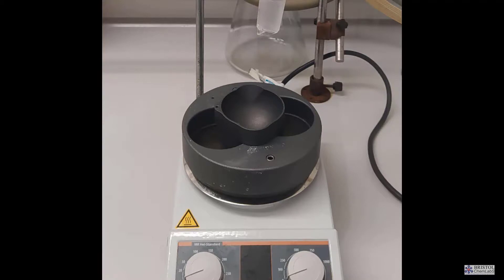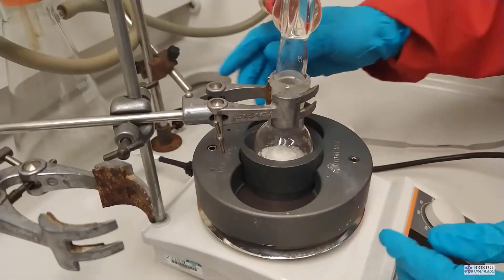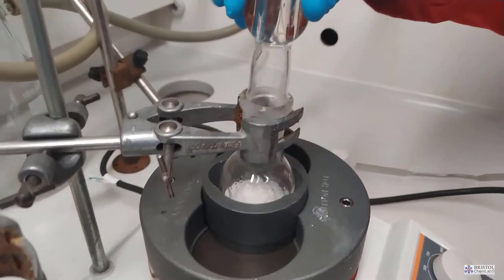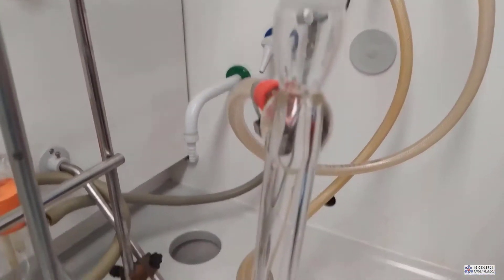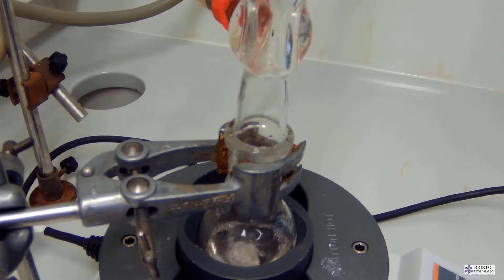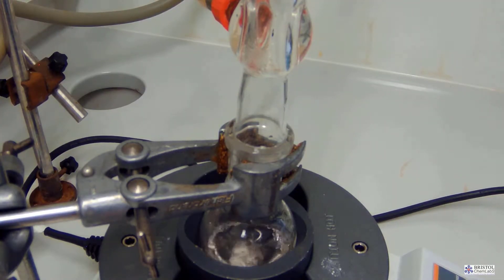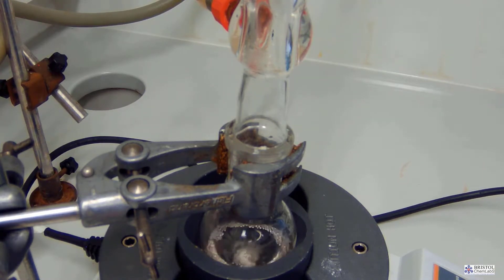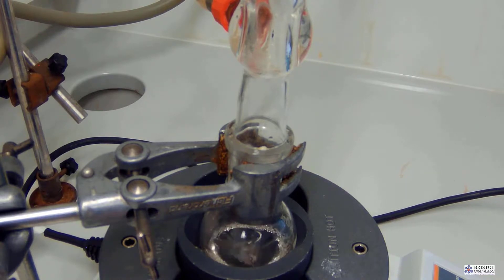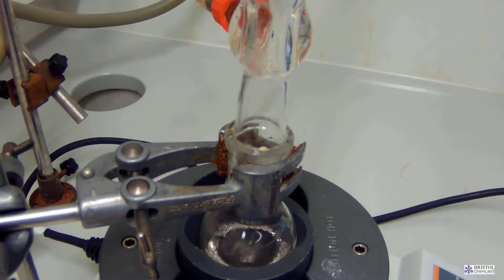You should note that many diagrams for reflux in textbooks tend to be wrong. There should only be one clamp engaged in the apparatus and that secures the neck of the reaction vessel. The condenser merely sits into the top of the reaction vessel and this makes it easier to remove once the reaction is complete. You've only got one clamp to move to remove the reaction vessel from the heating mantle.